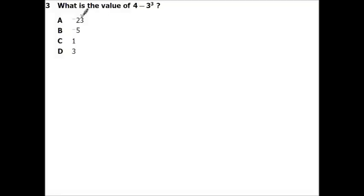Alright, what is the value of 4 minus 3 to the third power? So that's just 4 minus 3 to the third power is 3 times 3 times 3, which is 27. 4 minus 27 is negative 23.